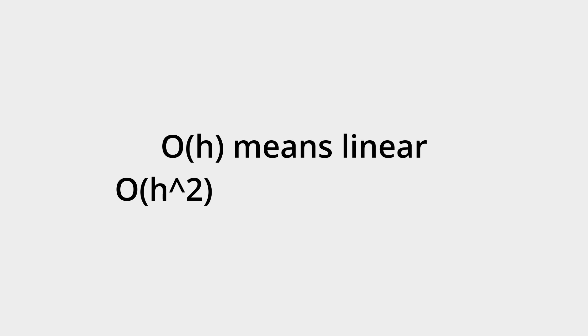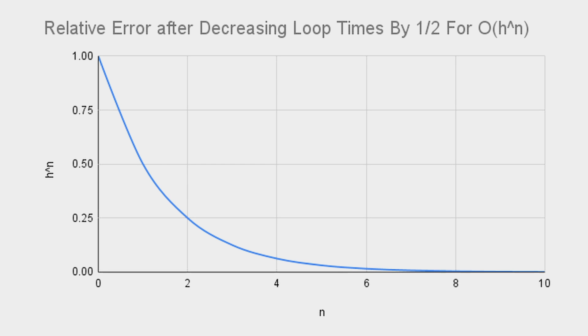When discussing error, we use the notation OH to the n to represent the relationship between error and loop time. For instance, if the relationship is OH, then if we halve loop times, we will halve the error. This continues for OH squared, where if we halve loop time, we will quarter the error. Hopefully, just based on that example, you understand why we want n to be as large as possible. But to put it simply, the larger n gets, the less error we get.